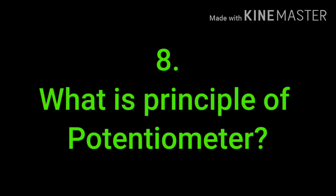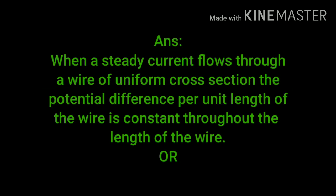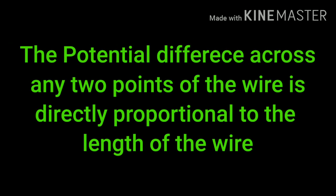What is the principle of a potentiometer? When a steady current flows through a wire of uniform cross section, the potential difference per unit length of the wire is constant throughout its length. The potential difference across any two points of the wire is directly proportional to the length of the wire.